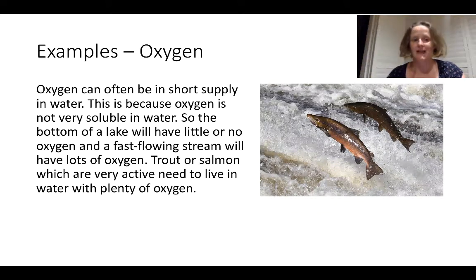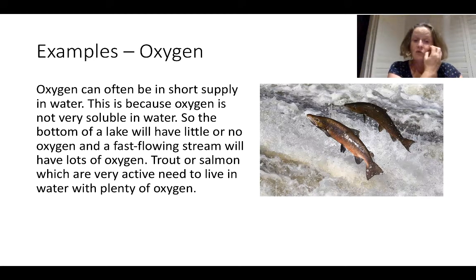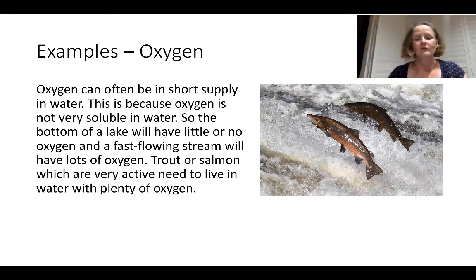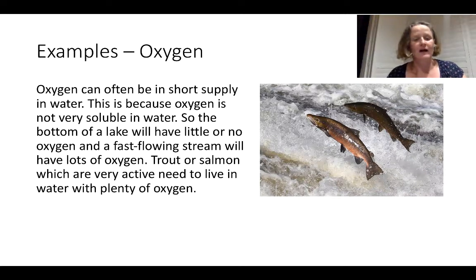Oxygen is an extremely important gas. All animals need it to survive because you need it for respiration. Plants provide it, but it can also be dissolved in water from where a plant has produced it, or picked up from the air. A fast and active swimming fish like a salmon is going to survive better in fast flowing water that has lots of oxygen dissolved in it, compared to the bottom of a lake or pond where still water will not have a lot of oxygen. So animals will choose ecosystems that suit their needs, and there will be adaptations that allow them to survive well in particular ecosystems.